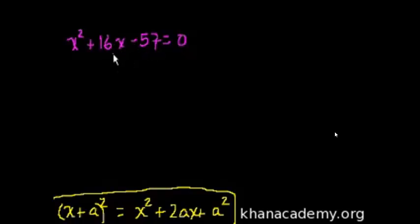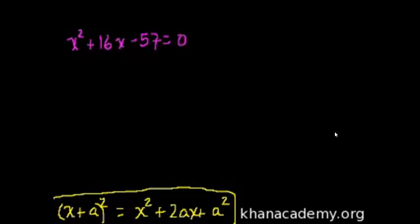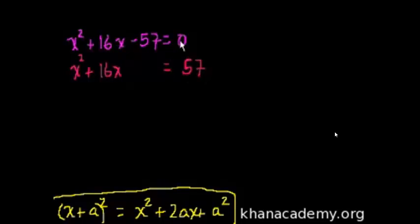This is the whole rationale behind completing the square: to get an equation into the form x plus a squared on one side, and just have a number on the other side, so you can take the square root of both sides. Let's just check to make sure this isn't a perfect square. This coefficient would be equivalent to 2a, so a would be 8, and then this would be 64. This is clearly not 64, so this right here is not a squared expression.